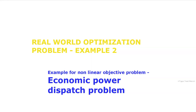Good day students. In this video we are going to see another real world optimization problem, and this problem is an example for the objective function which is non-linear in nature. The best example for this type of problem is the economic power dispatch problem.